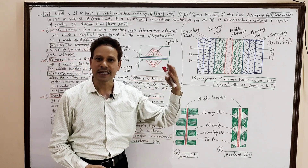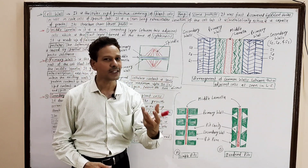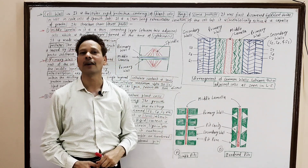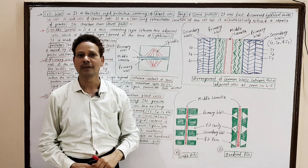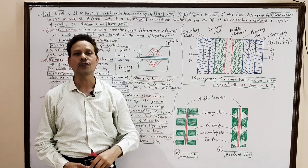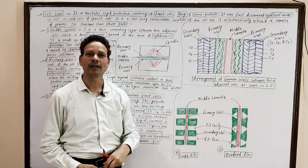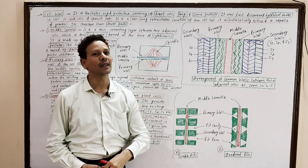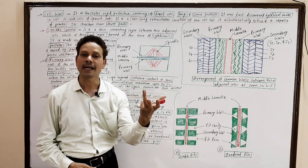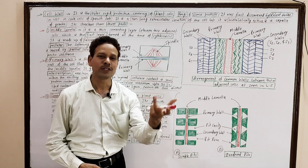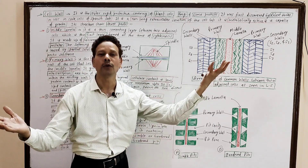It was first seen and observed by Robert Hooke in 1665 in cork cells of Spanish oak. This cell wall is a non-living extracellular secretion of cells, which is metabolically active and capable to grow.